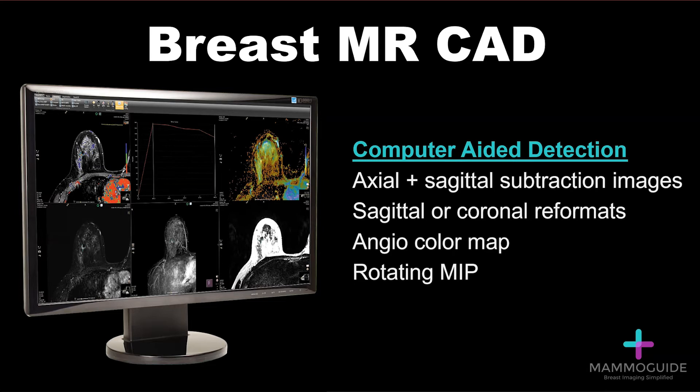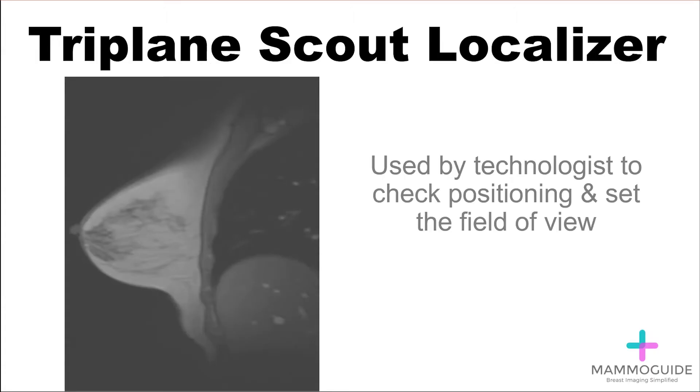This software allows for creation of axial and sagittal subtraction images, coronal or sagittal or any other plane reformats, color mapping and evaluation of kinetics, and rotating MIP, or maximum intensity projection images. Let's go through the sequences one by one.